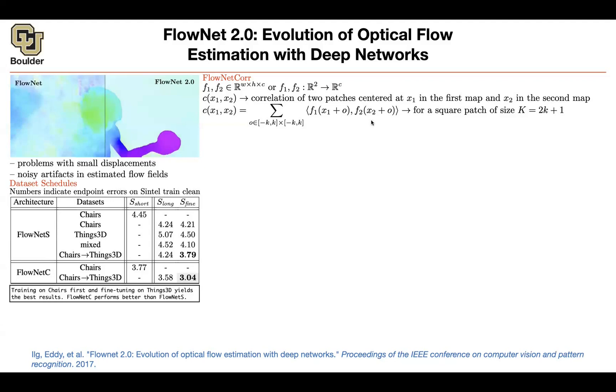It has c channels. The other one is the same thing. It has c channels. You can multiply them together. It's going to give you a scalar and then add everything up. So this is going to give you the correlation between a patch around x1 and a patch around x2 in a neighborhood that has size 2k plus 1.